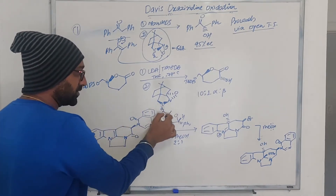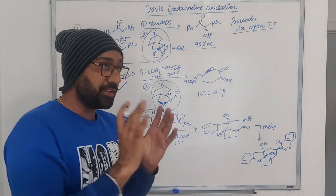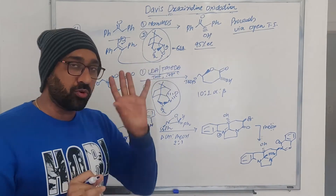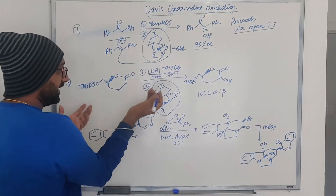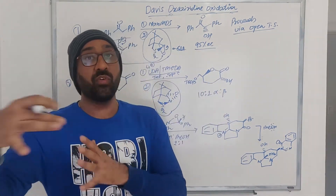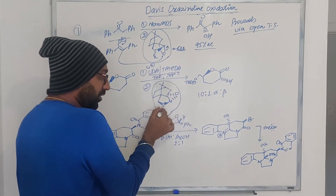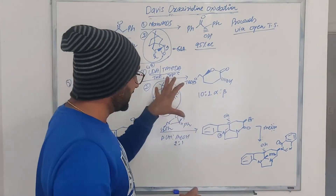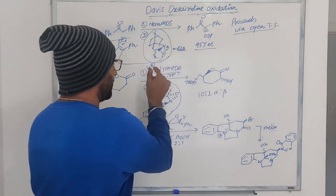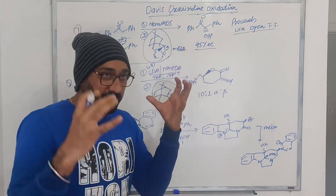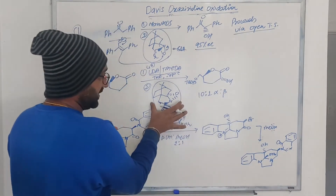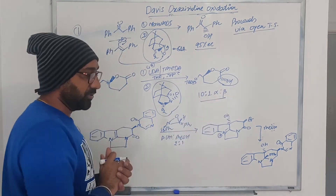In the next example, they are also using the oxaziridine derived from CSA. Here they are using LDA with TMEDA. I mentioned generally you do not use the lithium countercation, but here they are using a CSA-derived reagent along with tetramethylethylenediamine (TMEDA). Since the sulfonyl group is coming out of the plane, the hydroxylation goes behind the plane. The ratio obtained here is 10 to 1.